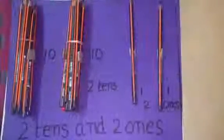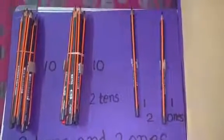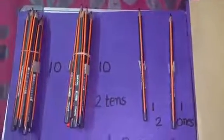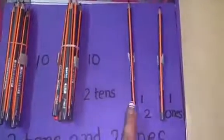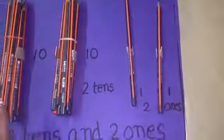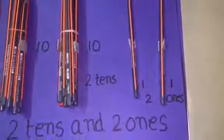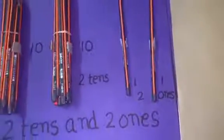Similarly, like matchsticks, we can take any number of objects from our surroundings. Let us see one more example. In this, we have 2 bundles of 10 pencils each and 2 loose pencils. Here, 2 bundles of 10 pencils give me 2 tens which is equal to 20. And 2 ones which is equal to 2.